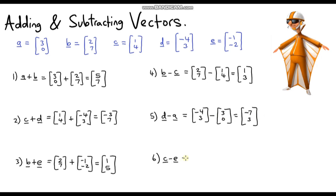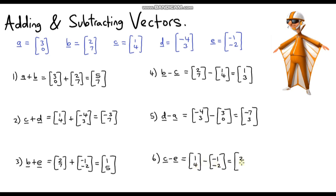The last question — we need to be a bit careful here. We've got vector C minus vector E. Our resulting vector will be 1 subtract negative 1. Now that is 1 plus 1, which is 2. Be really careful: when we're subtracting a negative number, that is the same as adding. Our vertical component is 4 subtract negative 2, which is the same as 4 plus 2, which is 6. So our answer is (2, 6).